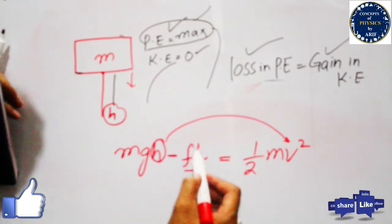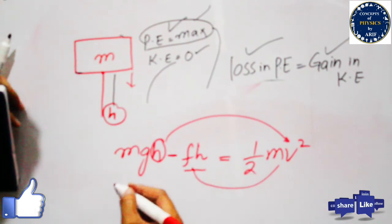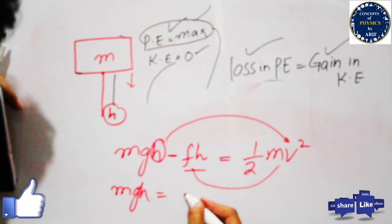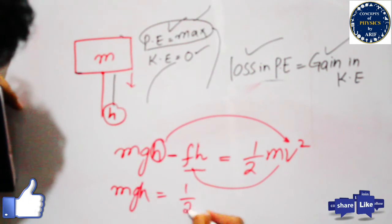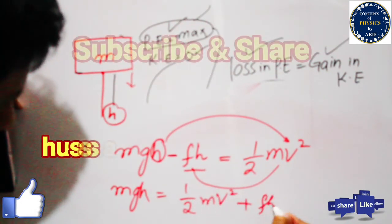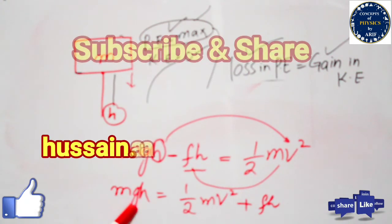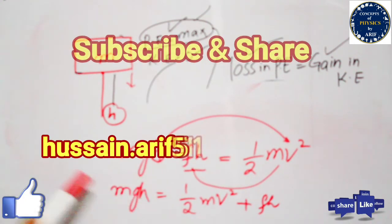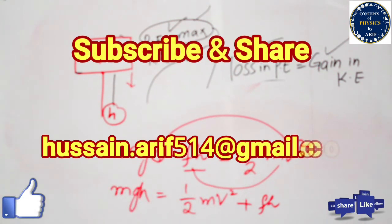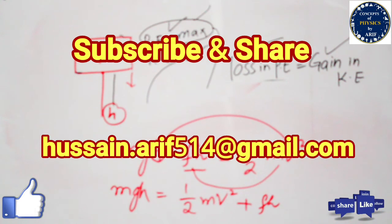Rearranging, mgh equals half mv2 squared plus fh. This means potential energy equals kinetic energy plus work done due to friction. This is the relationship describing the interconversion of kinetic energy and potential energy.